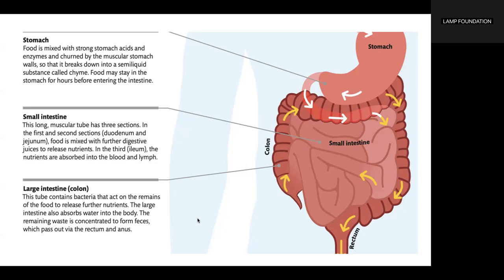The large intestine, or colon, contains bacteria that act on the remains of food to release further nutrients. The large intestine also absorbs water into the body. The remaining waste is concentrated to form feces, which pass out via the rectum and anus.